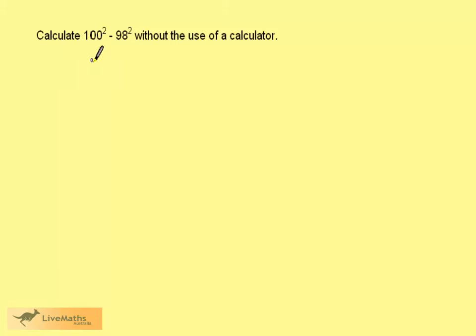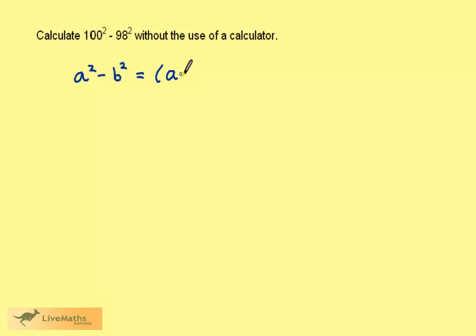We want to calculate 100 squared, take away 98 squared, without the use of a calculator. The difference of two squares is a squared minus b squared, and this factorizes to a plus b times a minus b.